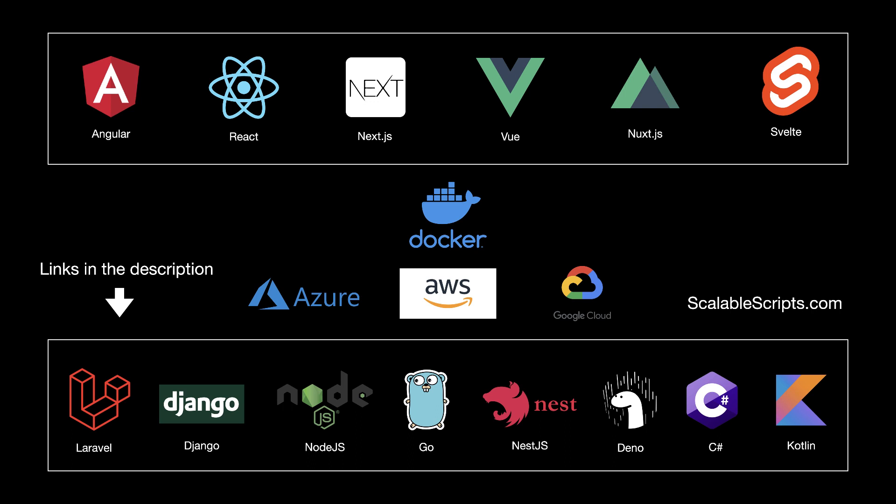In this project, we will create a Docker image for each of these languages and frameworks and push the Docker image to Azure, AWS, and Google Cloud Platform. Everything will be almost the same — the apps won't connect with each other. The only difference will be the Dockerfile, so the implementation will be almost similar for all the projects.